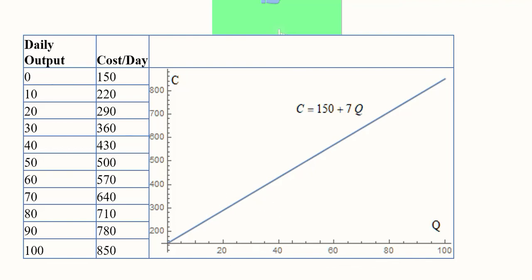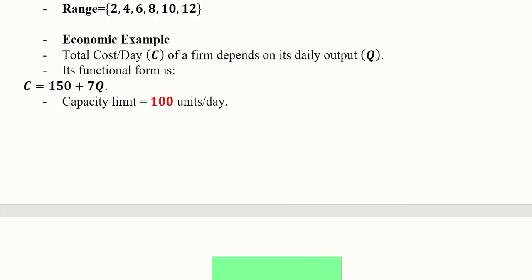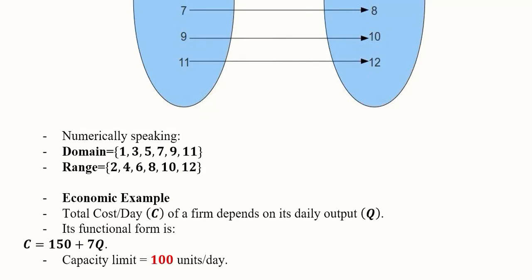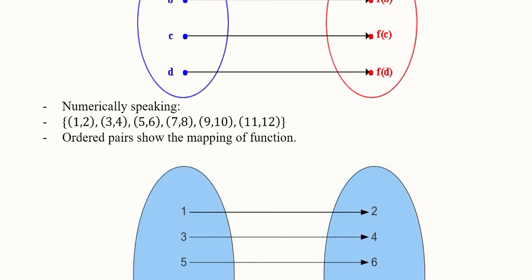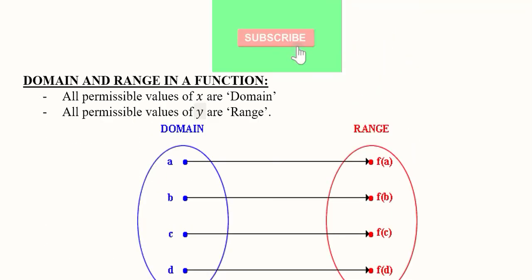So in this way we can see that mapping can be done of a function, and there is a domain and a range, and domain gives rise to range. Here there was an economic example of it as well, in addition to these mathematical examples. So this is how we do this analysis of a function with the help of distinction between domain and range. Thank you.